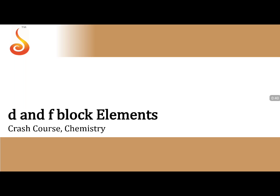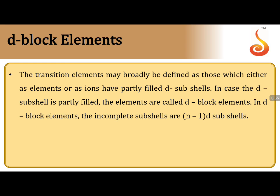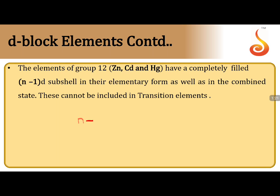Let us start our journey with the d-block and f-block elements. D-block elements are those elements in which the differentiating electron enters into the penultimate shell d-orbitals. These are also called transition elements — broadly defined as those elements or ions which have partially filled d-orbitals. The incomplete subshells are (n-1)d subshells, with electronic configuration (n-1)d¹⁻¹⁰ ns⁰⁻².